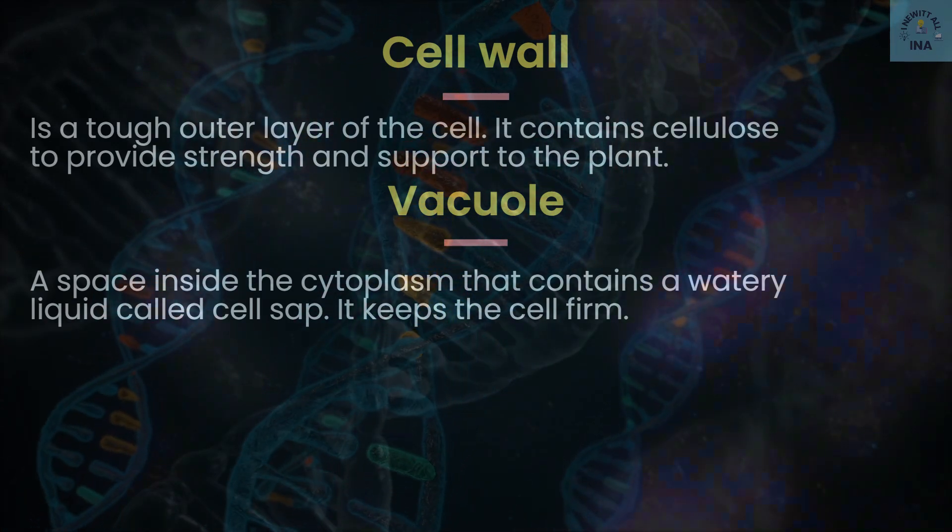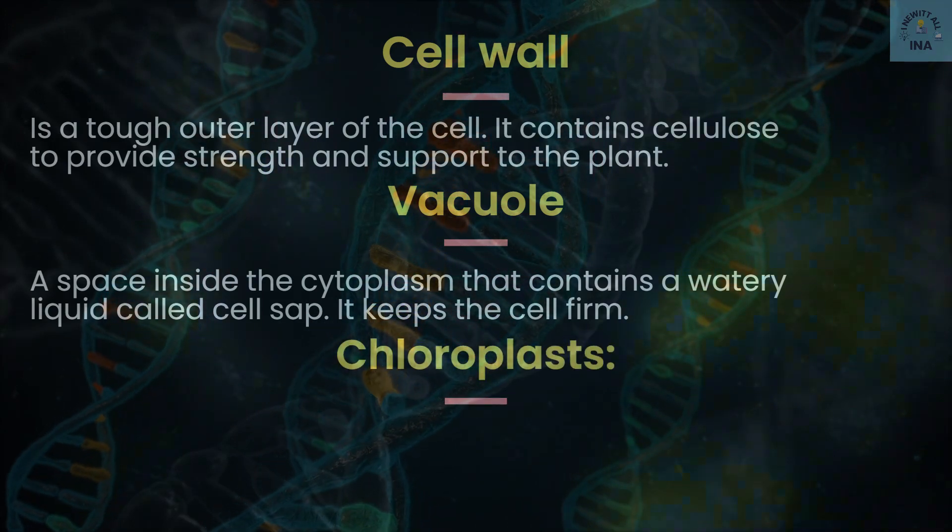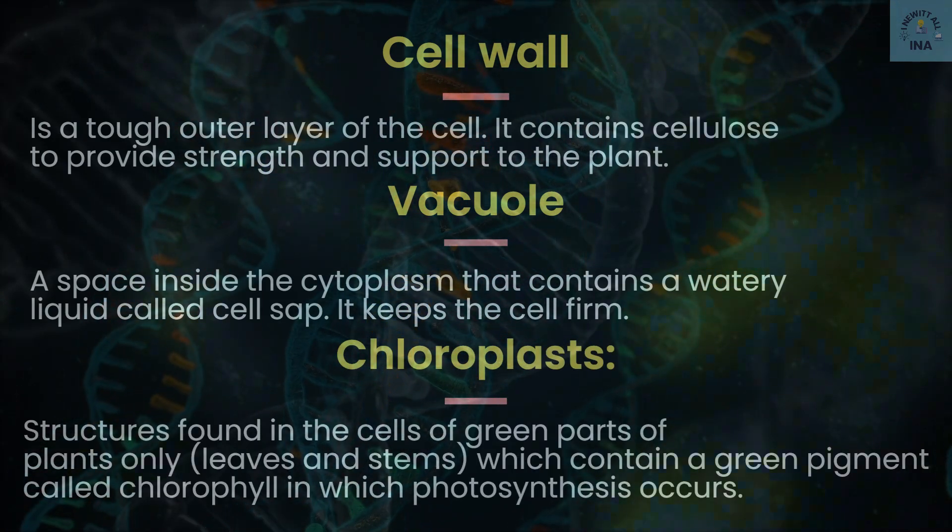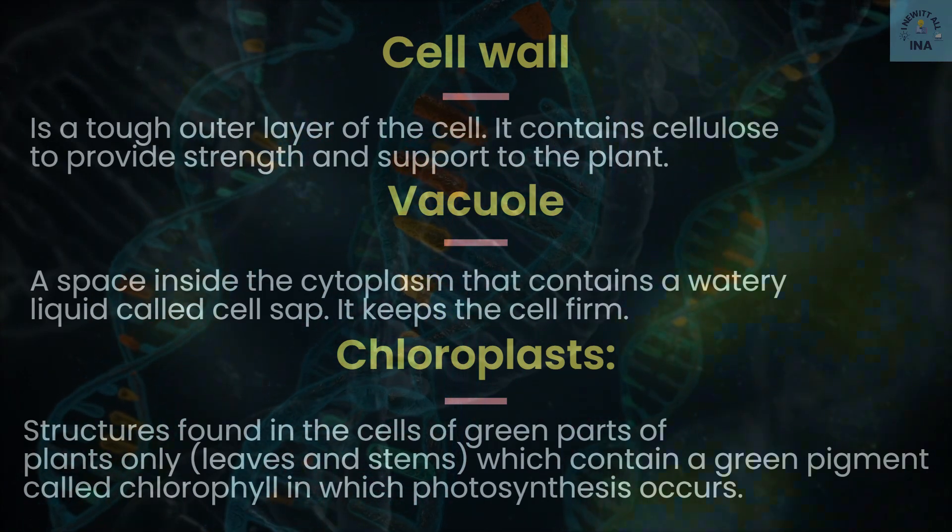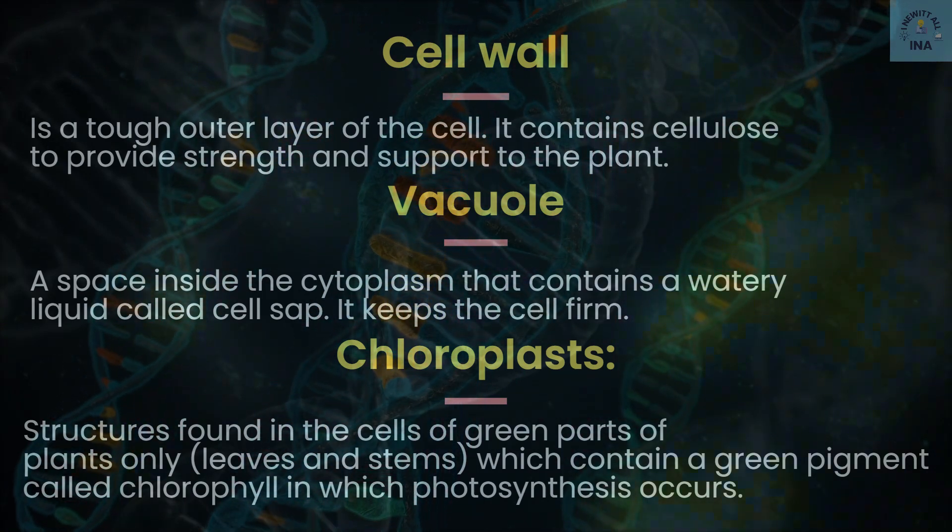Chloroplasts: structures found in the cells of green parts of the plant (leaves and stems) which contain a green pigment called chlorophyll in which photosynthesis occurs.